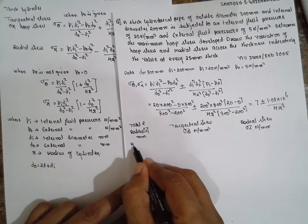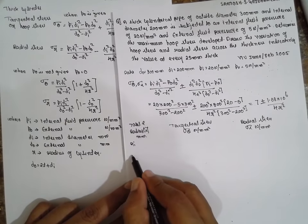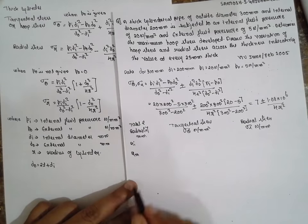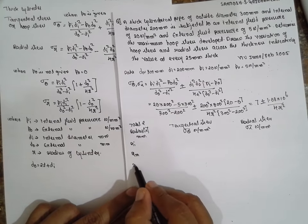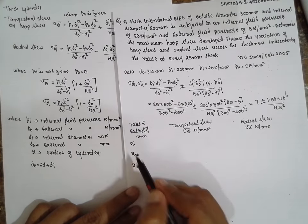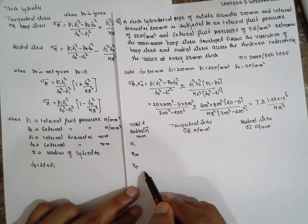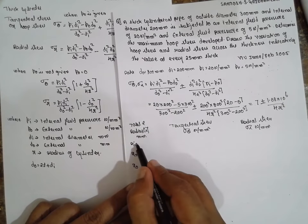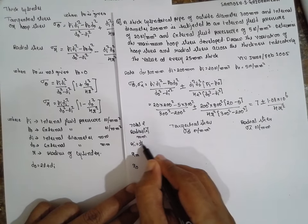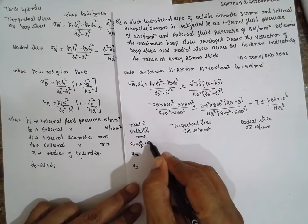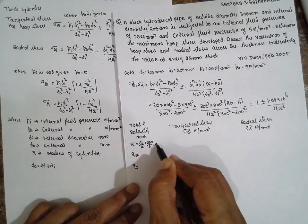First you have to consider Rᵢ value, next Rₘ, then R₀: inner radius, mean radius, and outer radius. For Rᵢ, Dᵢ divided by 2, 200 divided by 2 is 100 mm.